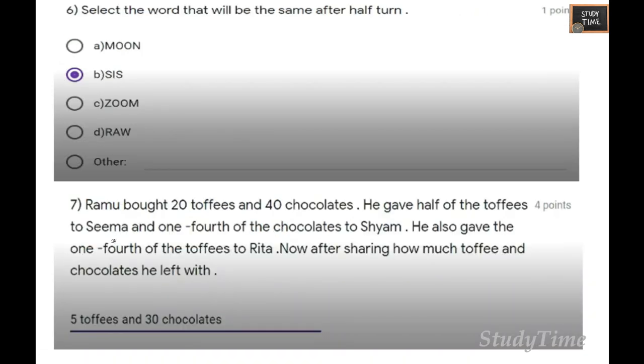Next, select the word that will be the same after half turn. The answer is SIS. When you turn it half turn, you will be getting S-I-S. You can write it in your hand and check.